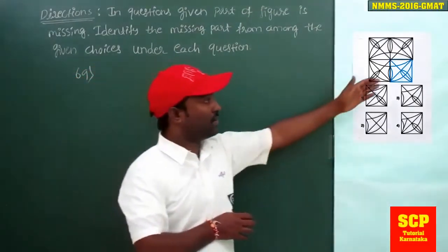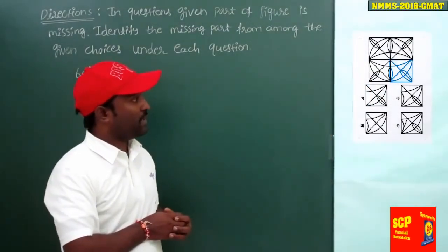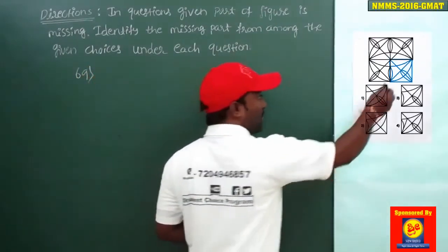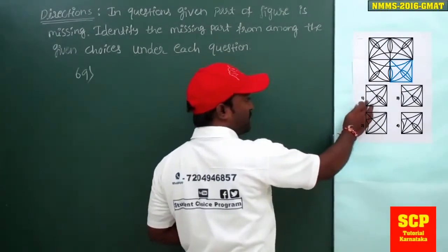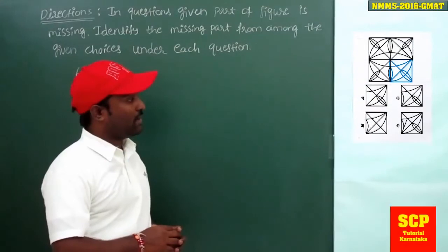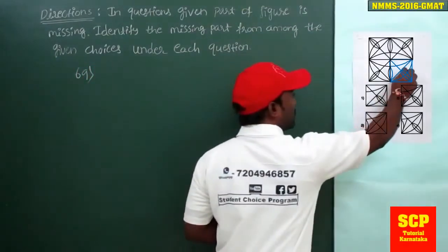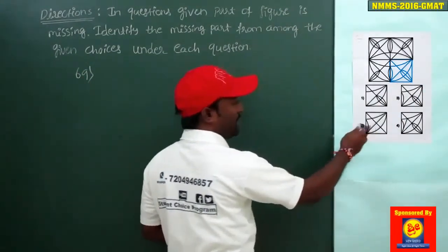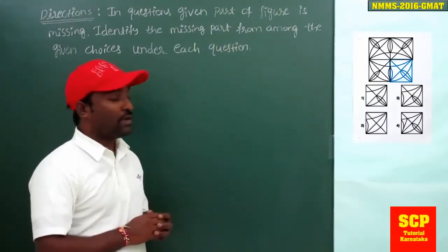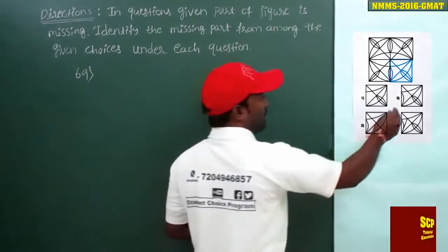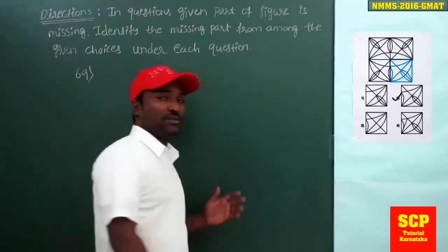Now compare the drawn figure with the first option. The first option is missing this curve — this curve is not present in the first option, so the first option is wrong. Moving to the second option, this part of the shape is not present in the second option, so option two is also wrong. Moving to the third option, the third option contains all the complete parts which were missing. Therefore, the third option is the right option. This is how we solve this example.